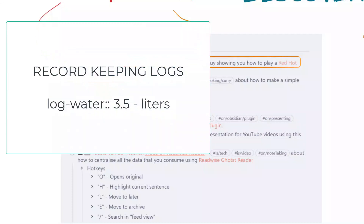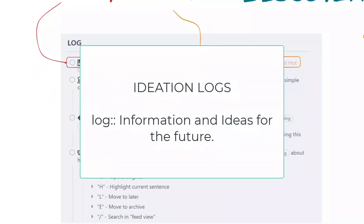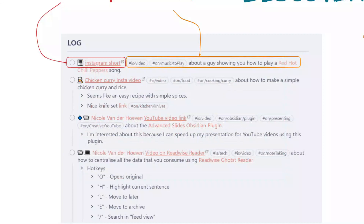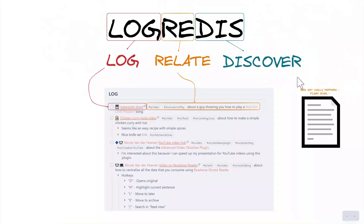There are two types of logs. First, record-keeping logs: how much water am I drinking, how much exercise am I doing in a week — something you can tally up or review in a year's time that gives you information about the past. It's a retrospective exercise you can then use to improve future projects or habits. Second, ideation logs — which most of this would be. It's information for the future: ideas that you want to intermingle with your own life and brain.